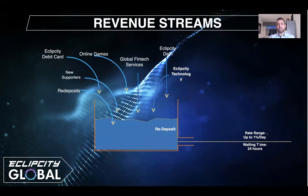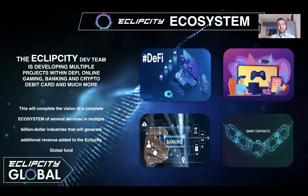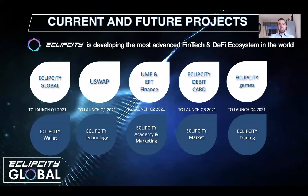The Eclipse City ecosystem dev team is developing multiple projects in DeFi, online banking, online gaming, and crypto debit cards, completing the vision of a full ecosystem with multiple services in billion-dollar industries. Let's look at the roadmap. Current projects include Eclipse City Global, USwap — the leading DEX exchange on the Tron network — UME and EFT Finance tokens, yield farming and staking through USwap, the Eclipse City debit card, and Eclipse City games.